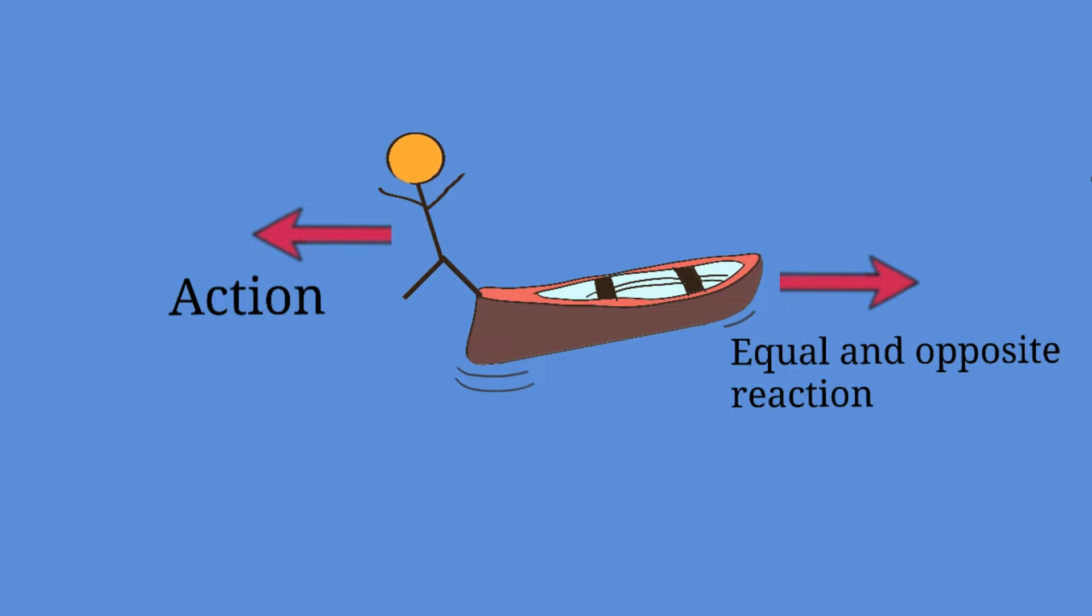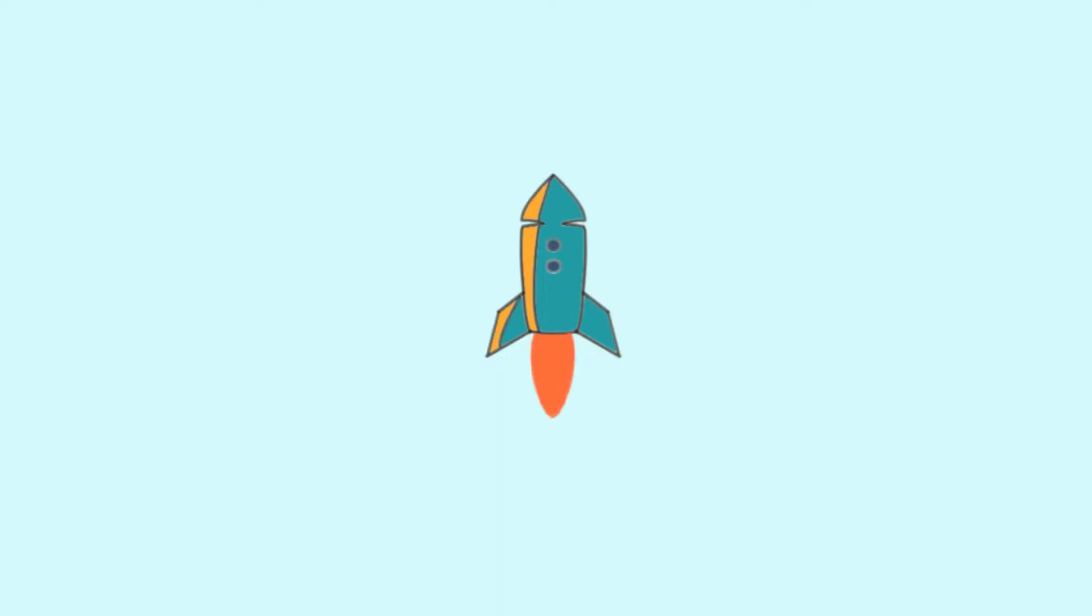Perhaps a more familiar example of Newton's third law of motion is a rocket. The gases ignited in the engines expand and flow downwards out through the nozzles. This is a change in the velocity of the expanding gases directed downwards. That is the action. The equal and opposite reaction is the force accelerating the rocket upwards.